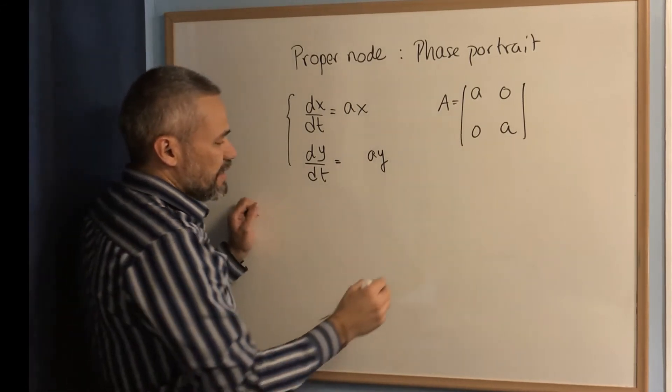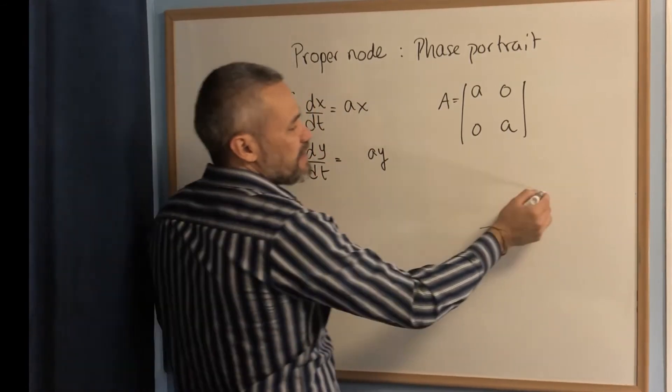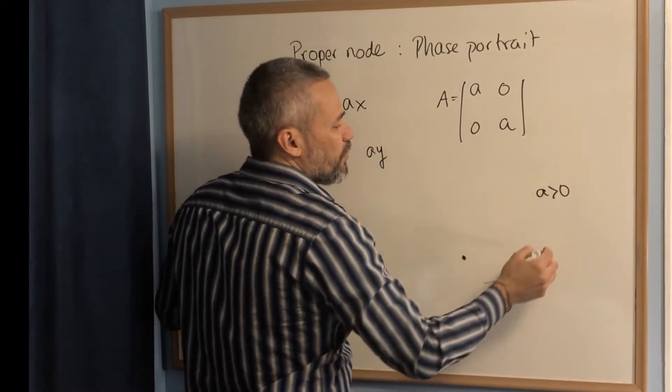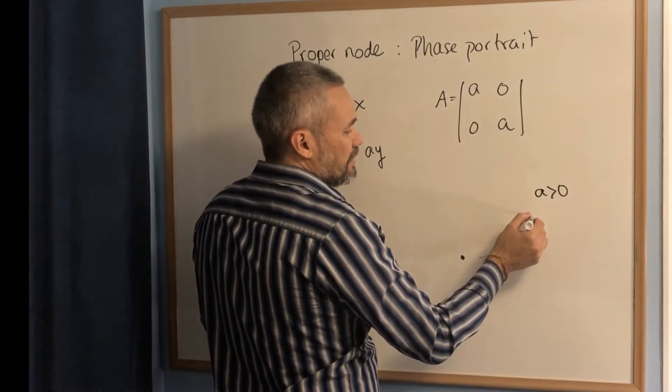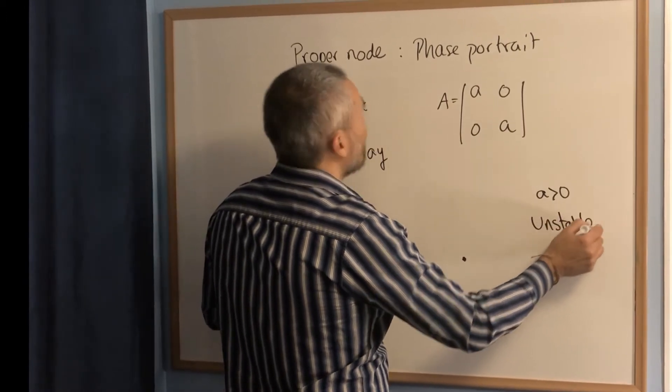And then, in this case, the phase portrait goes like this. If we have, if a is bigger than zero, then we call that an unstable proper node.